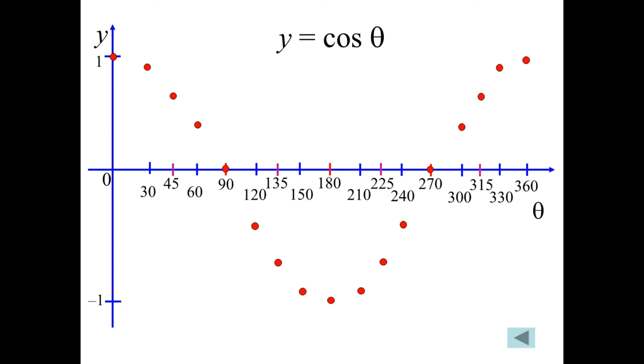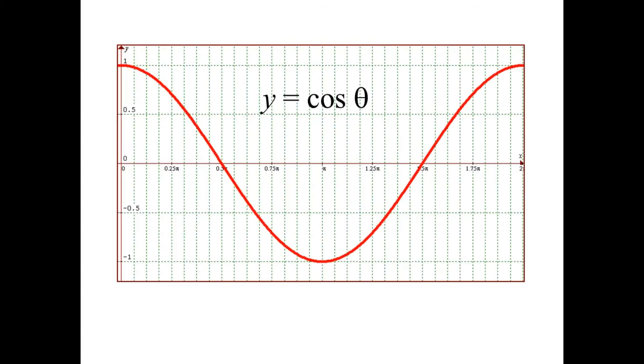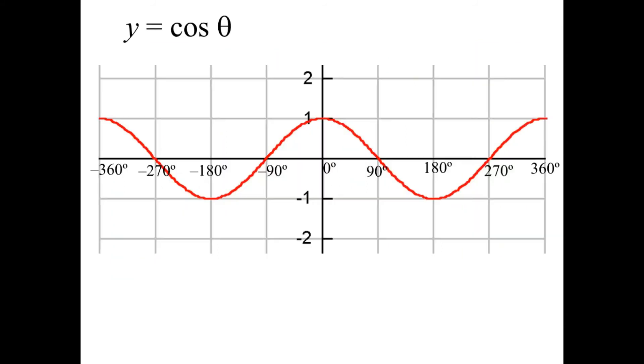And this is the cos curve. It looks like this. It is, in fact, the exact same curve as the sine curve, just shifted to the left. I've extended it again into the negative quadrants, all the way back to negative 360 degrees. And we can see that yes, it's the same curve. It has the same period, which is 360 degrees. It has the same amplitude, which is 1.